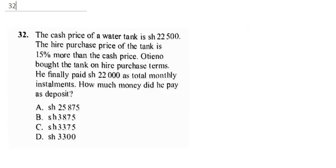The next question says: the cash price of a water tank is 22,500 shillings. The hire purchase price is 15% more than the cash price. Tieno bought the tank on hire purchase terms and paid 22,000 shillings as total monthly installments. How much did he pay as deposit? This is a hire purchase question.